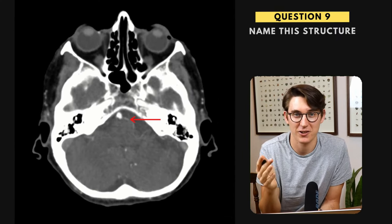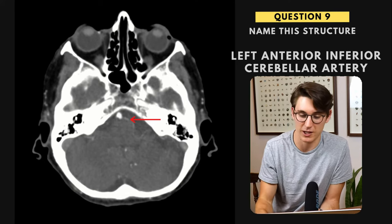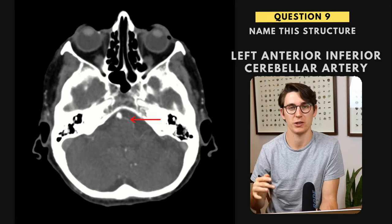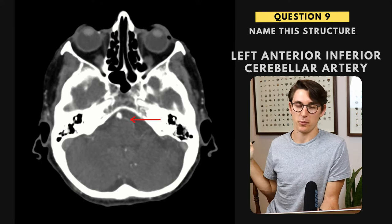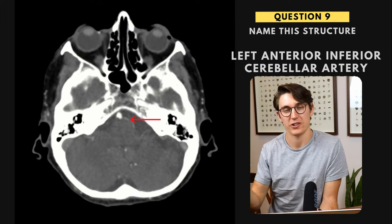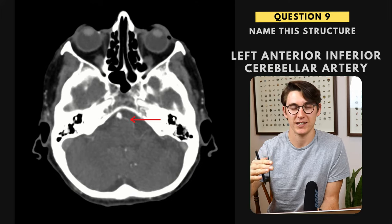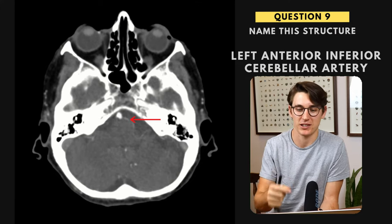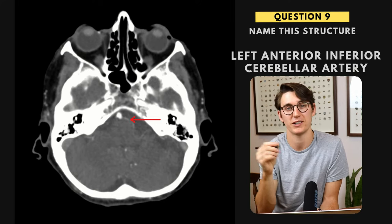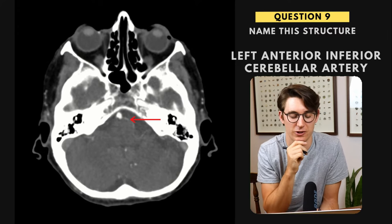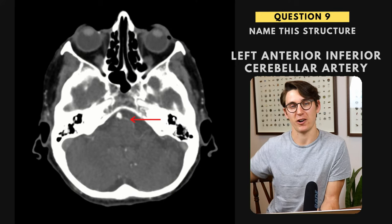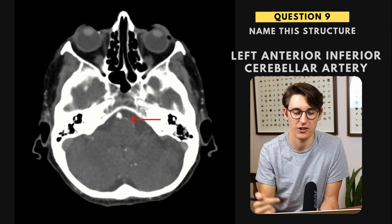Question nine — another vasculature question, slightly harder. This is the left anterior inferior cerebellar artery. The cerebellar arteries are a bit more difficult to label. Our vertebral arteries come from the posterior as they work their way up to form the basilar. First, off the vertebrals we get our posterior inferior cerebellar arteries. Then, off the superior portion of the vertebrals or the base of the basilar, we get the anterior inferior cerebellar artery. And higher up off the basilar, we get our superior cerebellar artery — there's no anterior or posterior there, just the superior cerebellar artery.